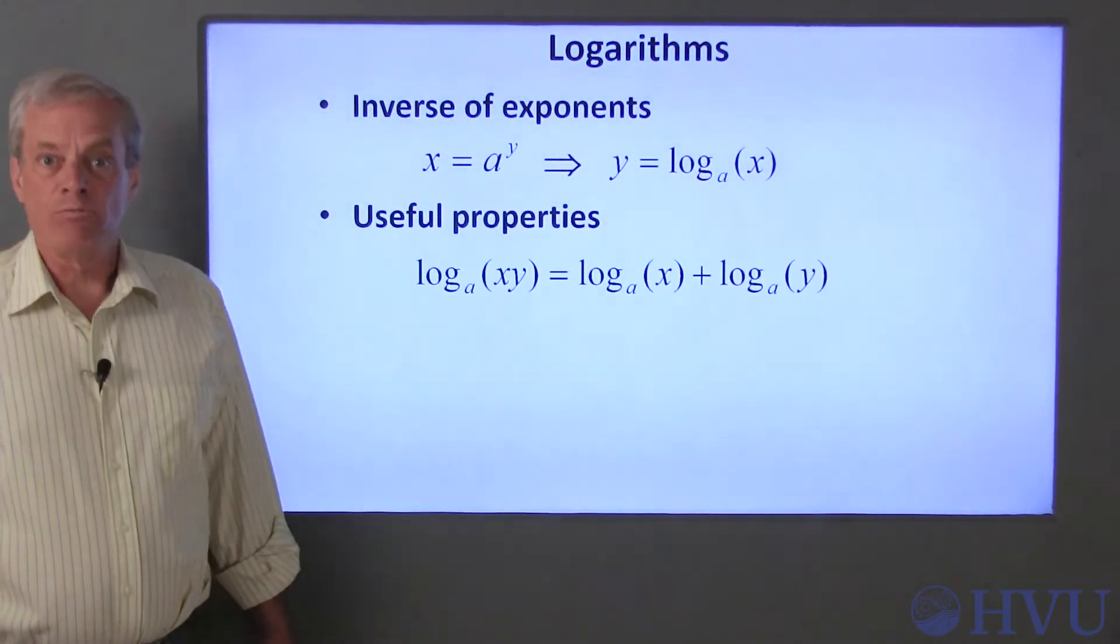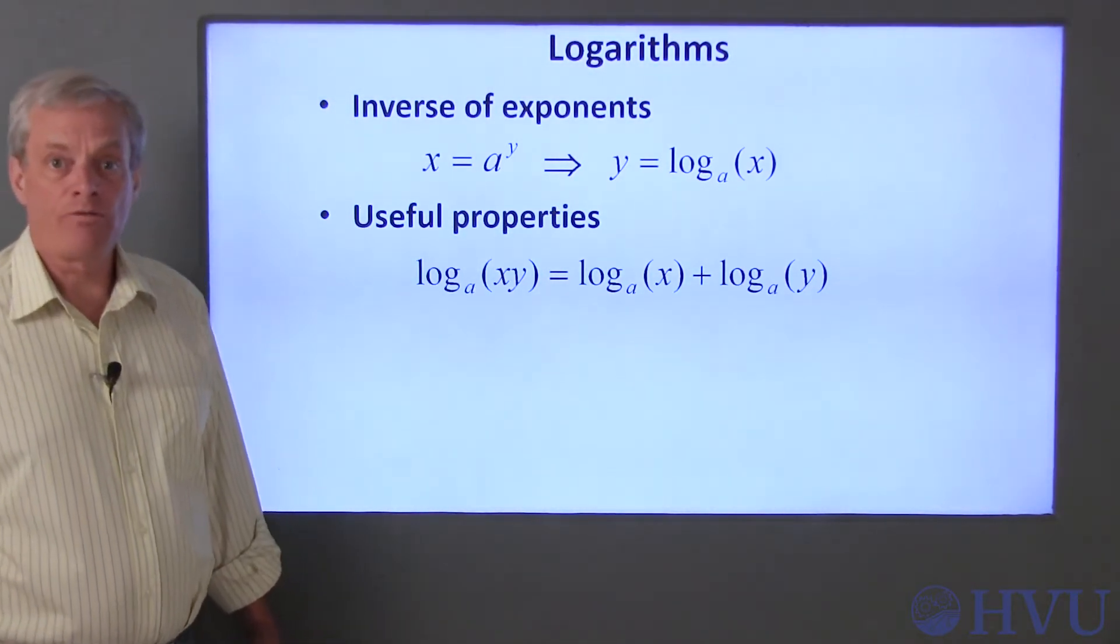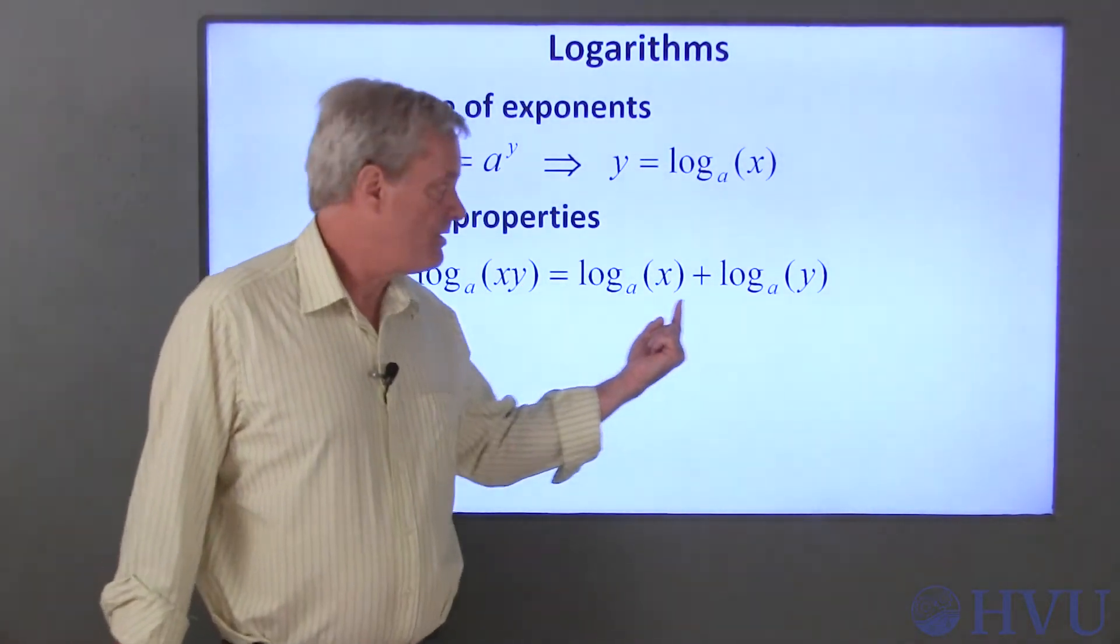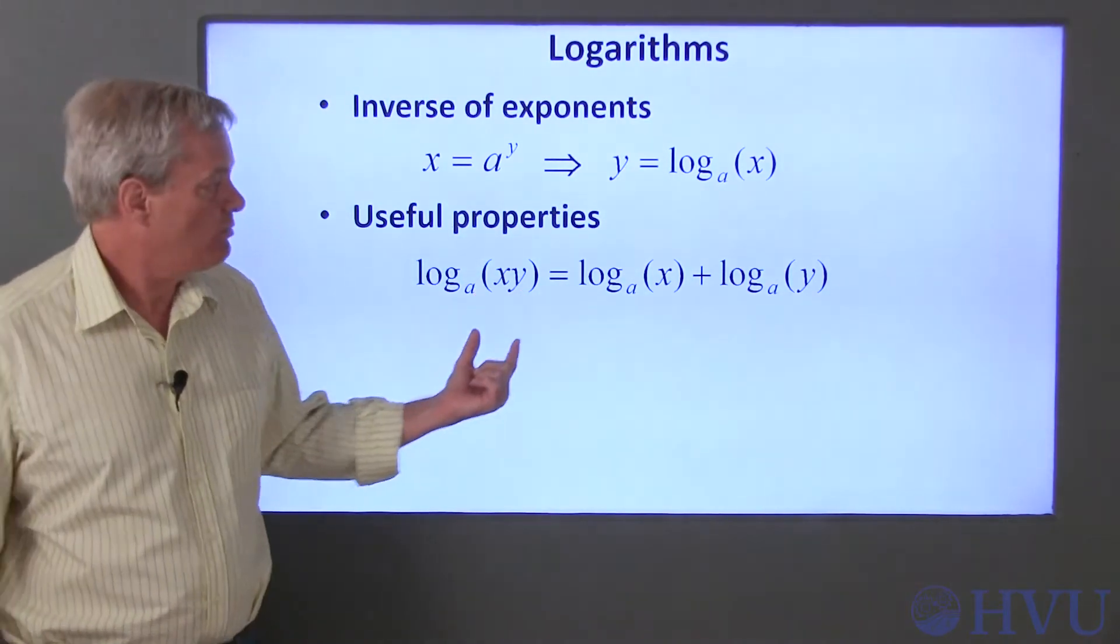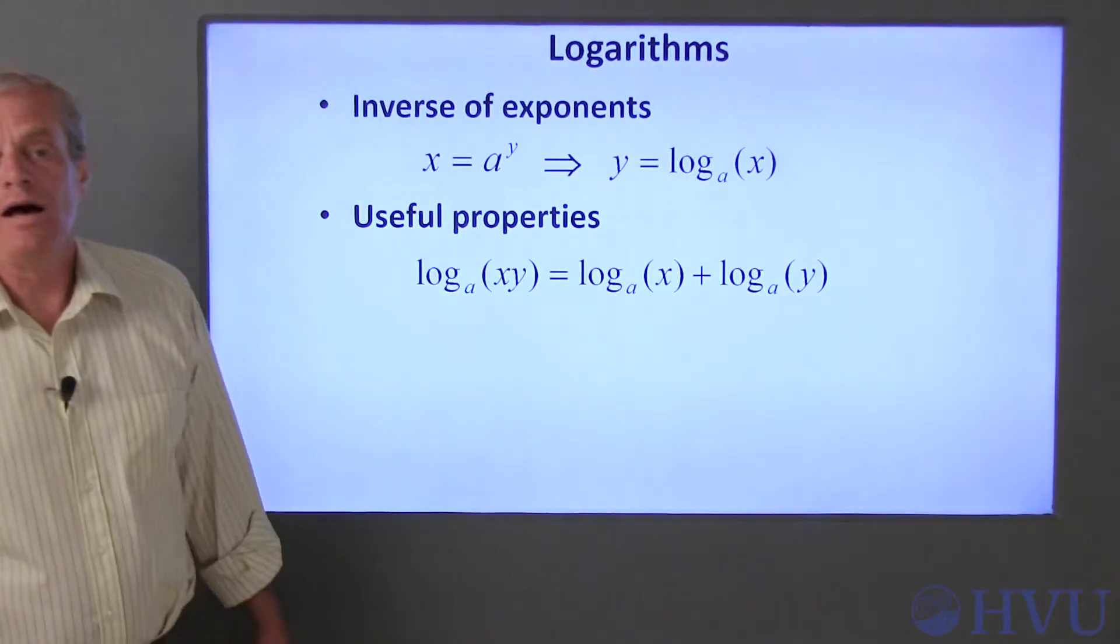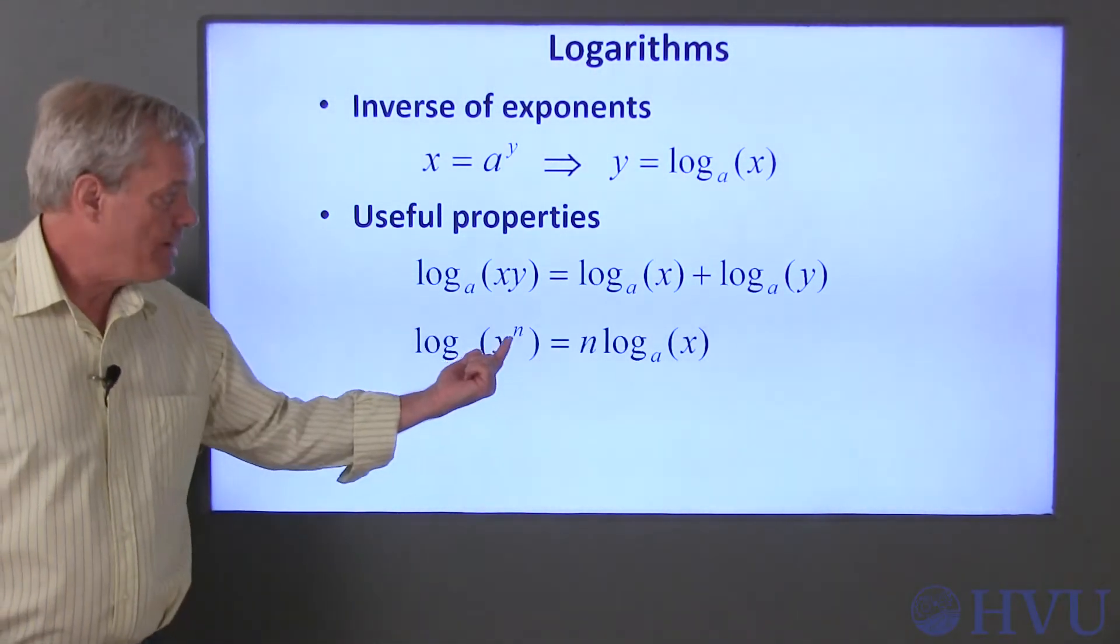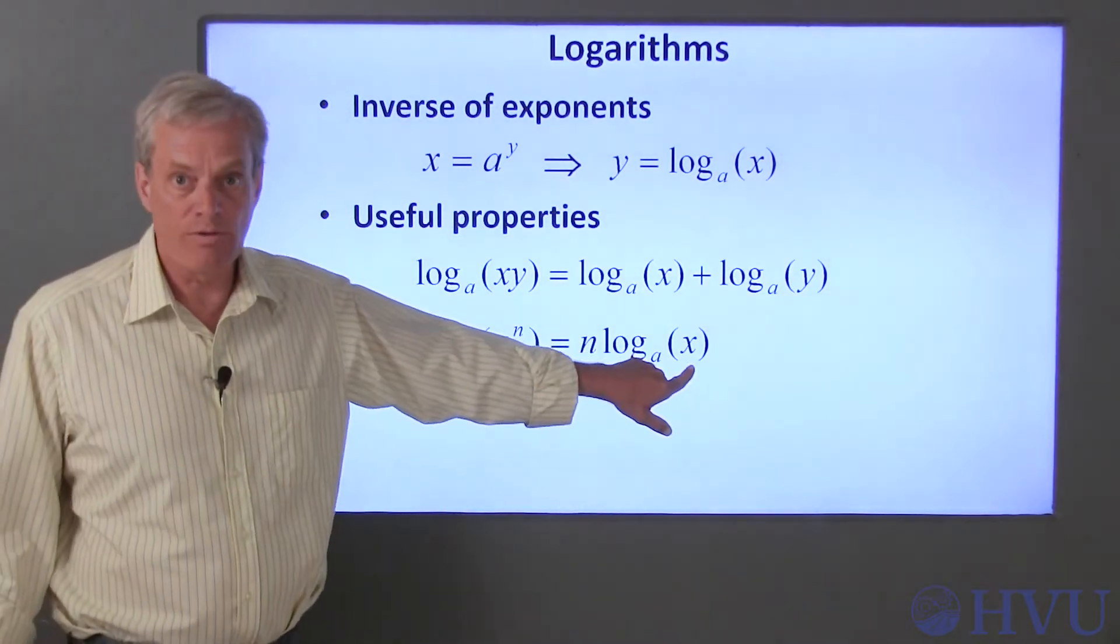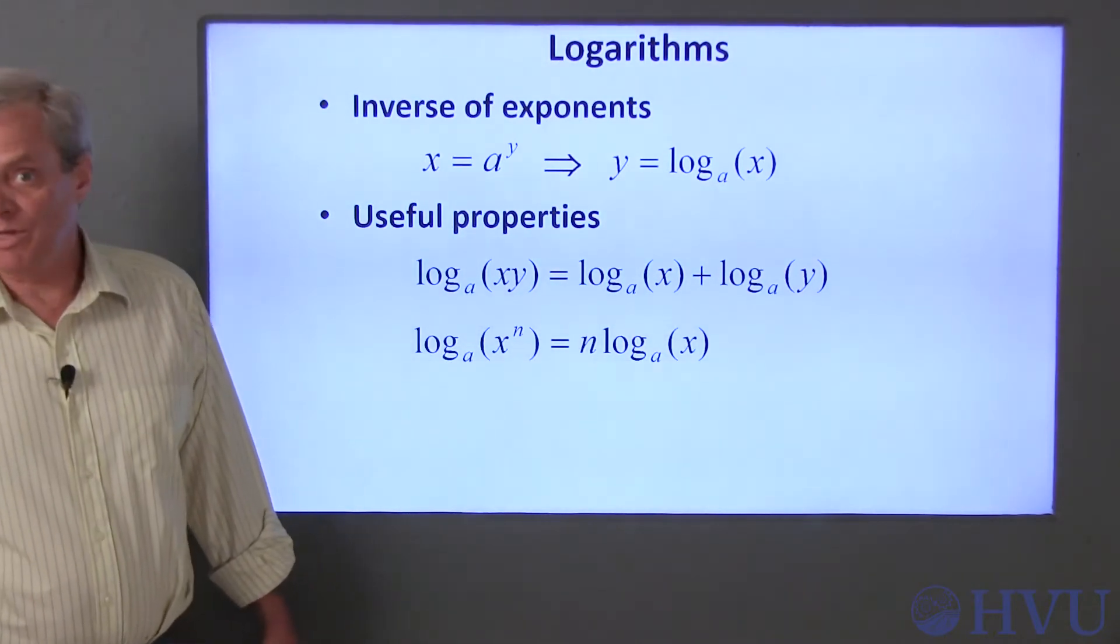One property of logarithms that we'll use is their ability to convert multiplication to addition. The logarithm of the product of two numbers is equal to the logarithms of the individual numbers added up. So the log of x times y is equal to the sum of the log of x plus the log of y. Another useful property is that the logarithm of a number x raised to the nth power is the same as n times the logarithm of x. So logarithms can also be used to convert exponentiation to multiplication.